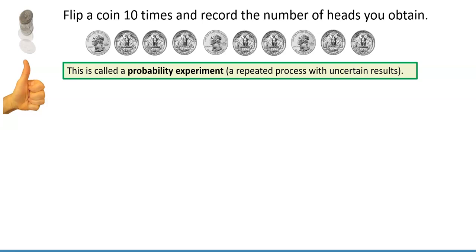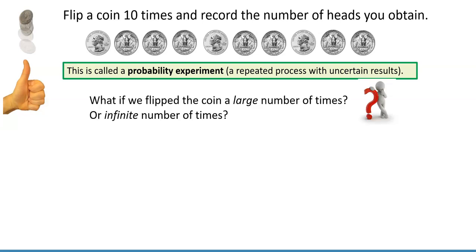In this little example, we can see that there are seven out of 10 heads. But what if we flip the coin a large number of times? How often would we expect to get heads in that case? How about an infinite number of times? Of course, we can't really do that by hand, but if we just imagine flipping a coin an infinite number of times.